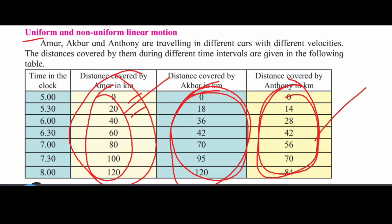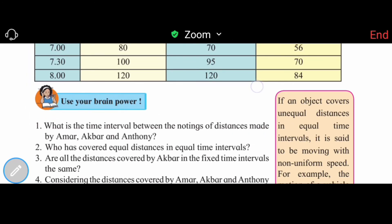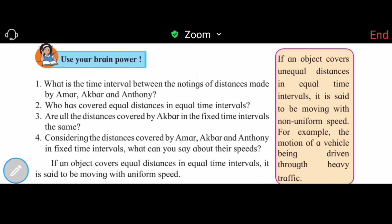This is uniform linear motion. What is the interval between the distances covered by Amar, Akbar, and Anthony? Amar has covered equal gaps each time. Akbar has covered different distances, and Anthony has covered the same distance each time — 14 km everywhere.